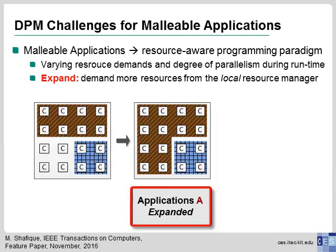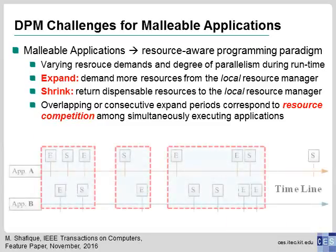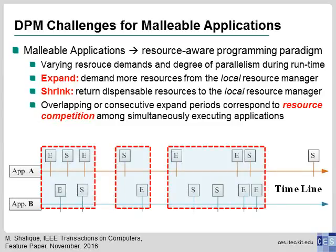During the expand operation, an application requires more cores from the local resource manager to meet its throughput requirements. For example, application A has expanded. When these cores are no longer needed — for example, a peak performance phase has ended and a low utilization phase begins — the application returns these cores to the resource manager, which can then be given to another competing application via the shrink operation. In this example, application A has shrunk and application B has expanded.